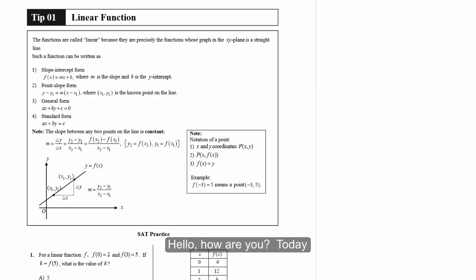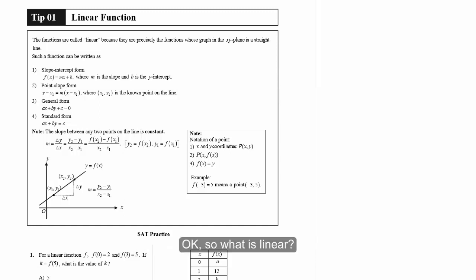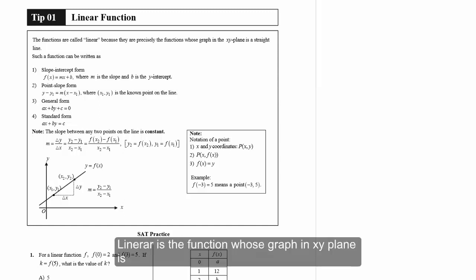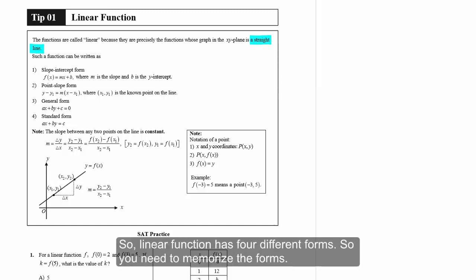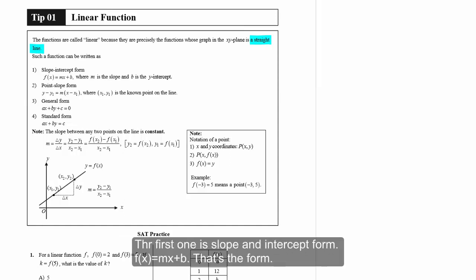Hello, how are you? This is John. Today we're going to start with tip one: linear functions. So what is linear? A linear function is one whose graph in the xy-plane is a straight line. A linear function has four different forms, so we need to memorize these four forms.